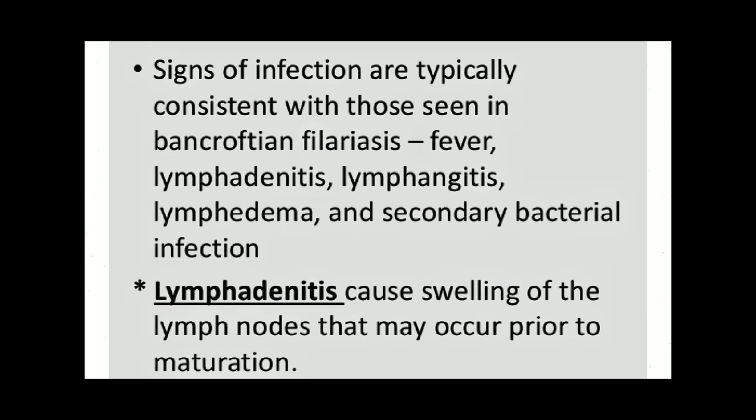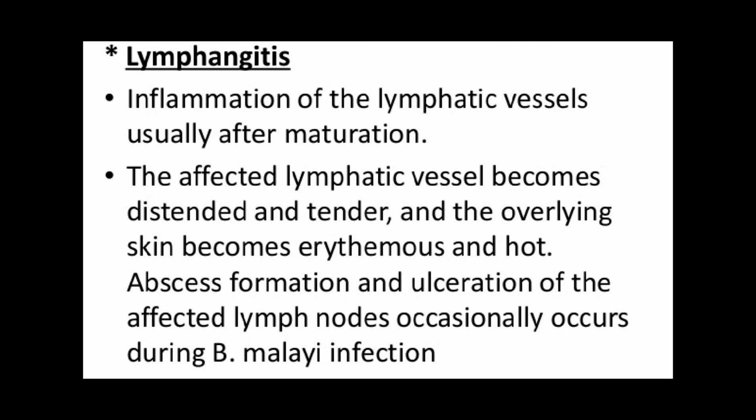Lymphangitis causes swelling of limbs that may occur prior to maturation. Lymphangitis is inflammation of lymphatic vessels, usually occurring after maturation. The affected lymphatic vessels become distended and tender, and the overlying skin becomes erythematous and hot. Abscess formation and ulceration of affected lymph nodes occasionally occurs during Brugia malayi infection.